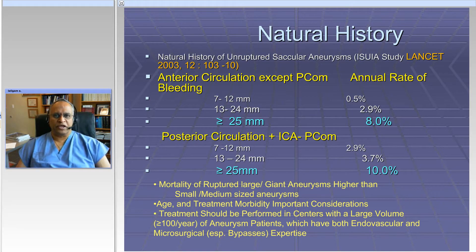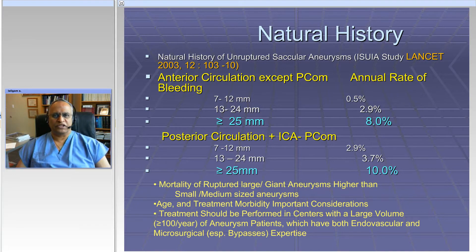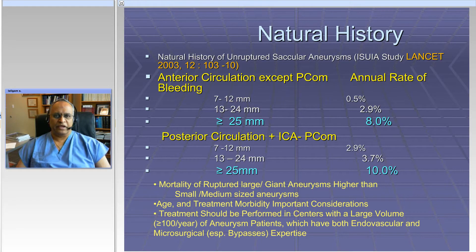When talking about the treatment of unruptured aneurysms, you have to think about natural history. The best study about natural history is the International Study of Unruptured Intracranial Aneurysms. There were some flaws in the study — patients being followed were those who had been rejected for treatment by other neurosurgeons. Nevertheless, it gave us a lot of valuable information, telling us that the rate of rupture depended on two things.